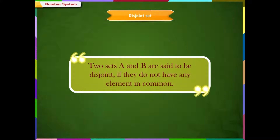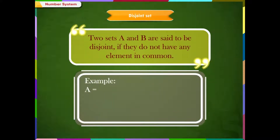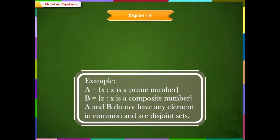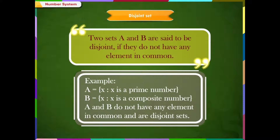Disjoint set: two sets A and B are said to be disjoint if they do not have any element in common. For example, A is equal to {X such that X is a prime number} and B is equal to {X such that X is a composite number}. Clearly, A and B do not have any element in common and are disjoint sets.